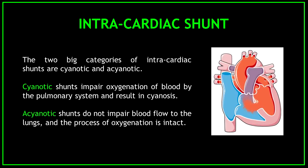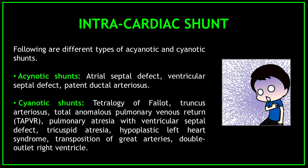The two big categories of intracardiac shunts are cyanotic and acyanotic. Cyanotic shunts impair oxygenation of blood by the pulmonary system and result in cyanosis. Acyanotic shunts do not impair blood flow to the lungs and the process of oxygenation is intact. The following are different types of acyanotic and cyanotic shunts.